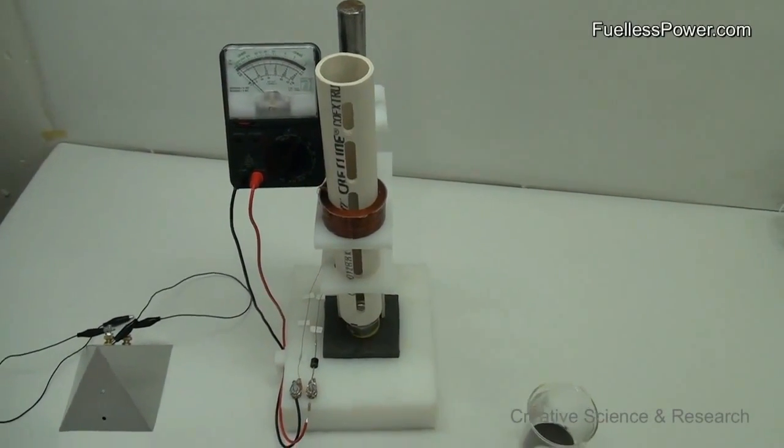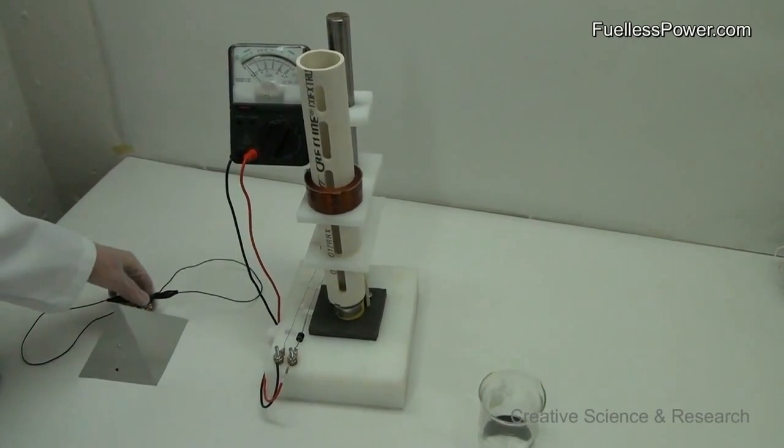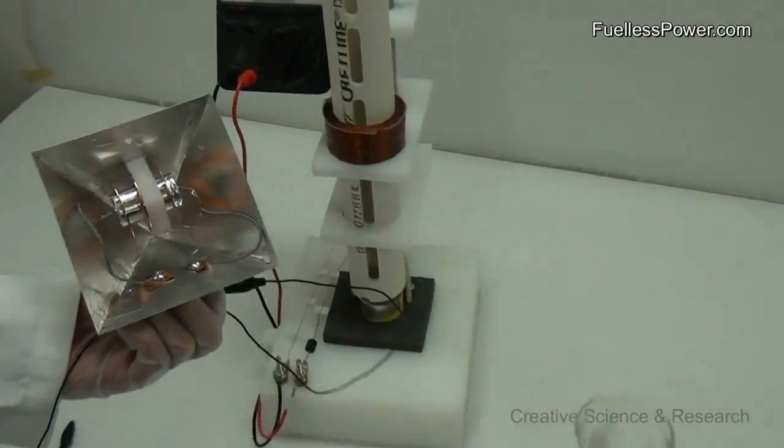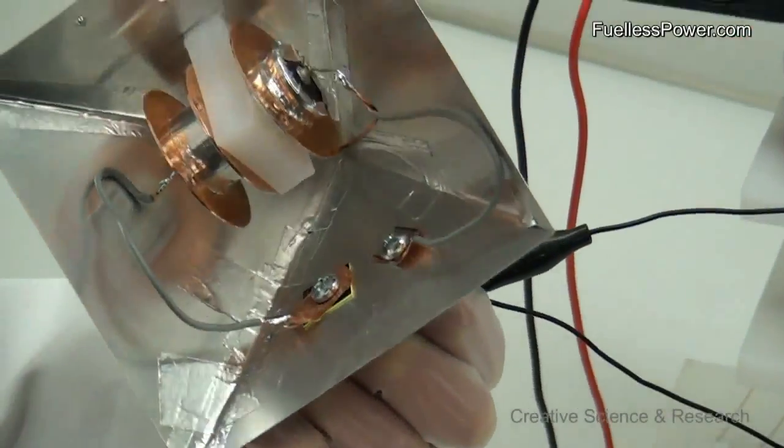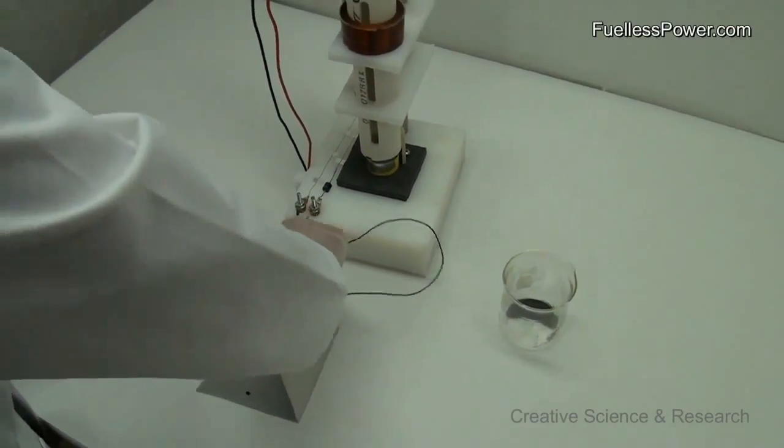Now in this second demonstration, you will see free energy actually being created right before your very eyes. This pyramid houses the actual free energy receiving device. We will now connect it to the generator coil.